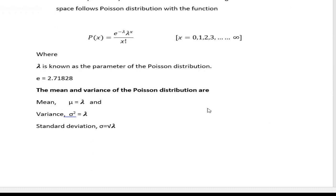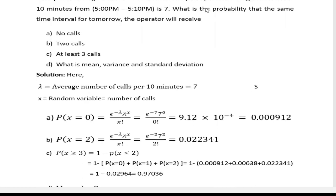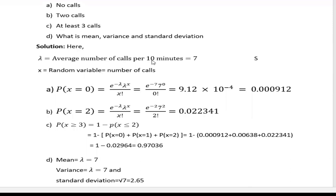Let's see some practical examples. Example one: the average number of calls received by an operator during a 10-minute interval, from 5 PM to 5:10 PM, is 7. We want to find the probability that in the same time tomorrow there will be: no calls, two calls, at least three calls. We also want to find the mean, variance, and standard deviation. The time interval is 10 minutes and lambda equals 7.